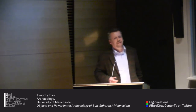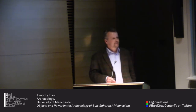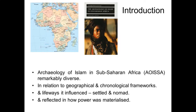The title is Objects and Power in the Archaeology of Sub-Saharan African Islam. I'm going to work from points on the screen so you can follow along. The first point is that the archaeology of Islam in Sub-Saharan Africa is remarkably diverse, as would be expected from a continent that size. I'll be dealing with examples from south of the Sahara, and this complexity and diversity operates in relation to both geographical and chronological frameworks, as well as in relation to the life ways it influenced, including both settled and nomad communities.